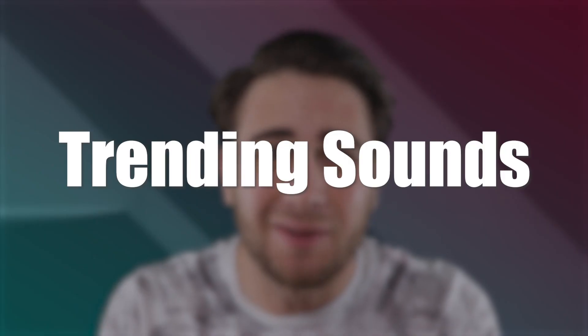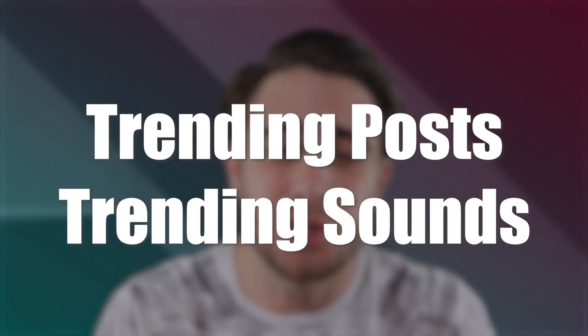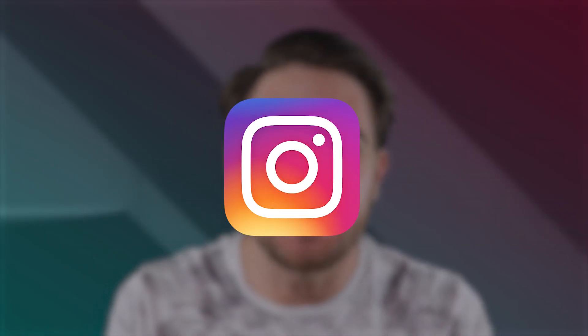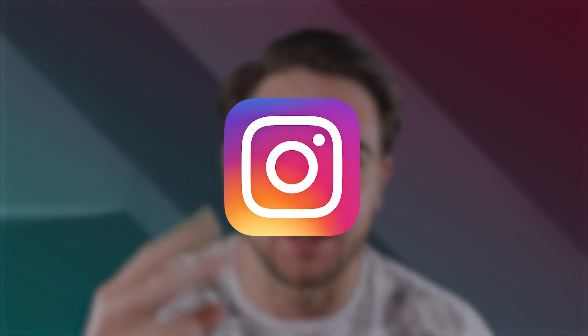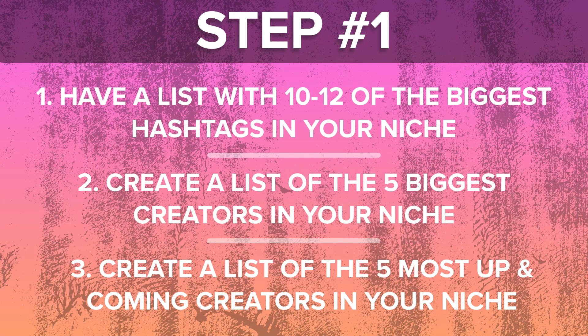The first step to finding trending sounds and trending posts within your niche on Instagram is you need to make sure that you have two things. First, a list of 10 to 12 of the biggest hashtags for your niche that are most representative of what you should actually be posting about. Secondly, you need a list of five of the biggest creators within your niche and then five of the biggest creators that are up and coming.